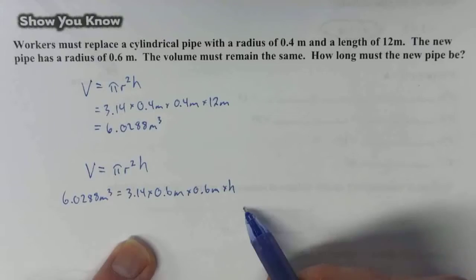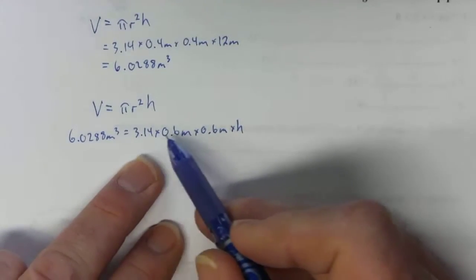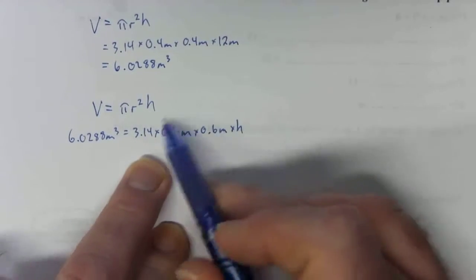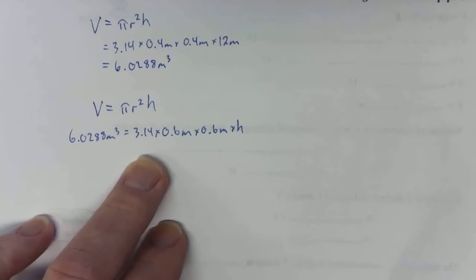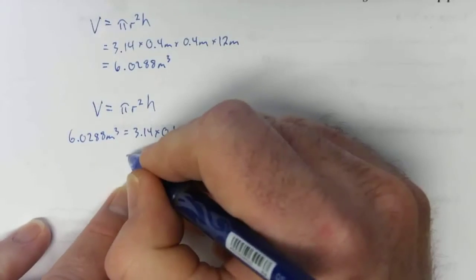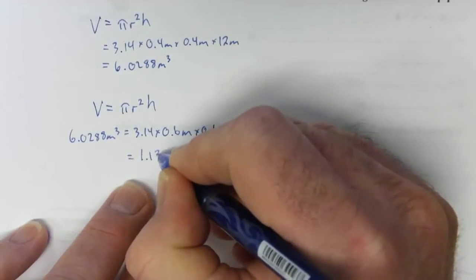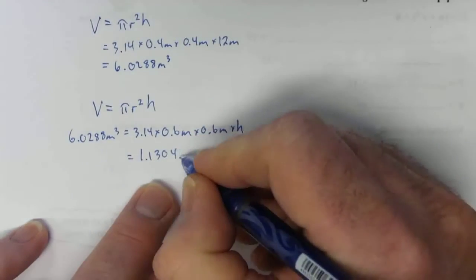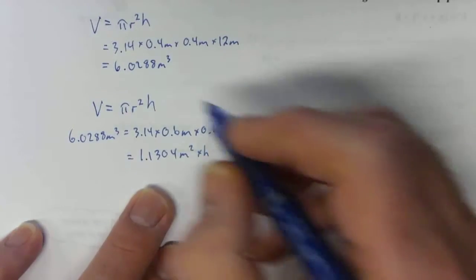So this is the equation that we're working with. I'm going to multiply these numbers together just to get it down to one number. So 3.14 times 0.6 times 0.6 works out to 1.1304 meters squared. That's times h.